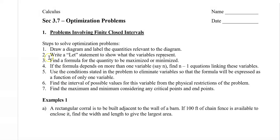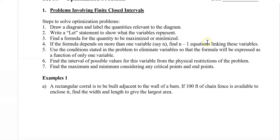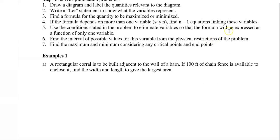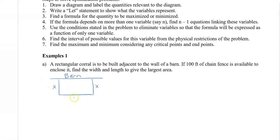In the first example, a rectangular corral will be built adjacent to the wall of a barn. One hundred feet of chain fence is available to enclose it. We want to find the width and length to give the largest area. Let's say this is our barn and we build a rectangular corral — a pen to hold animals. I'll label the two sides as x and the length as l. Let x equal the width and l equal the length.